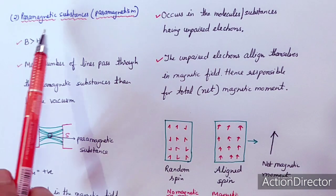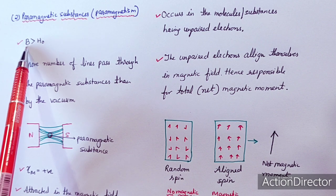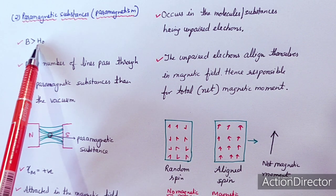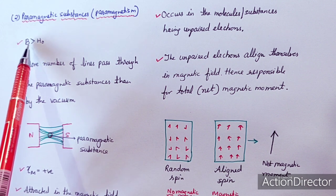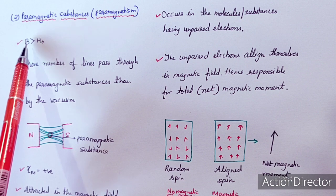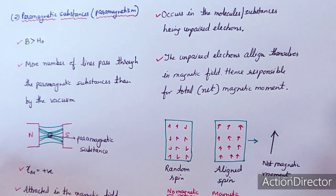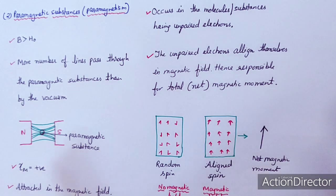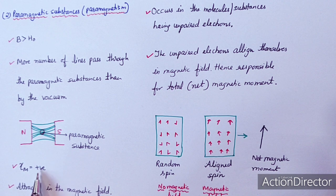Now the paramagnetic substances. In the case of paramagnetic substances, the value of the induced magnetic field is greater than H₀, so the ratio B upon H₀ will be greater than 1. The induced magnetic field is higher because these paramagnetic substances are attracted in the magnetic field. If we experimentally calculate the molar susceptibility, the value will be positive for paramagnetic substances.